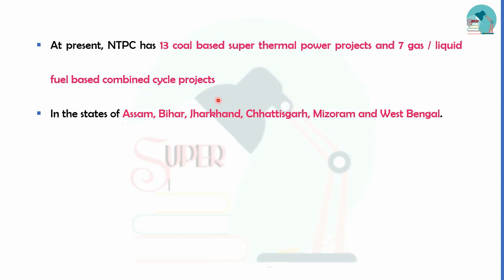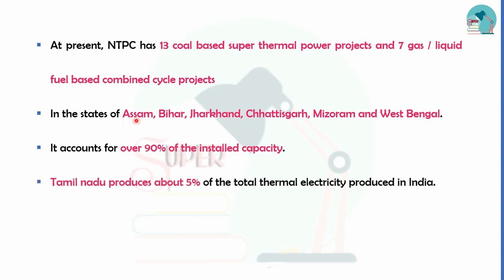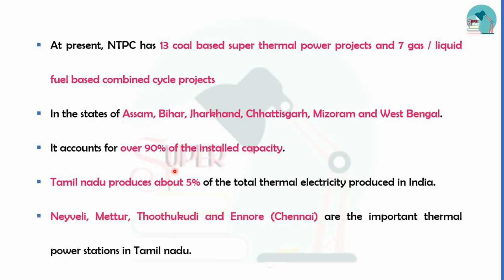The major thermal power stations are located in Assam, Bihar, Jharkhand, Chattisgarh, Mizoram, and West Bengal, accounting for 90% of installed capacity. In Tamil Nadu, we have 5% of thermal electricity produced. These are the important thermal power stations.